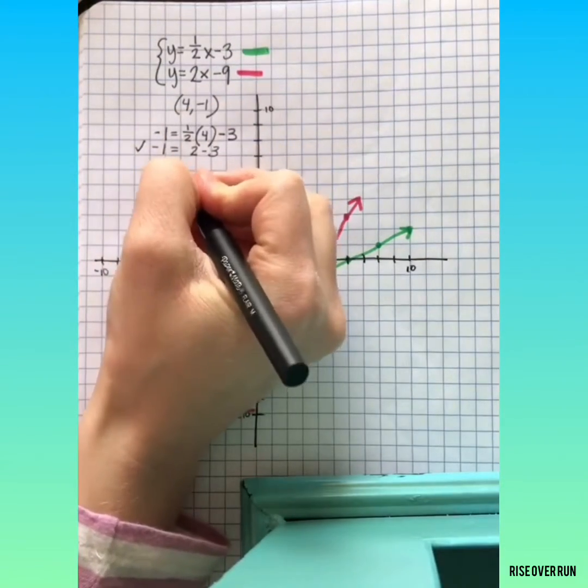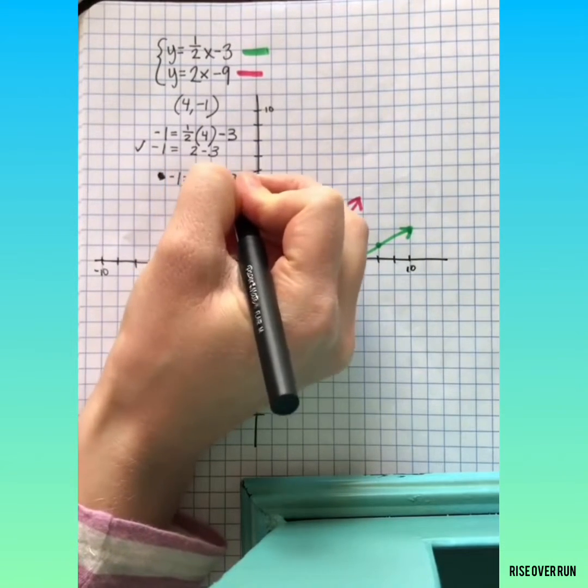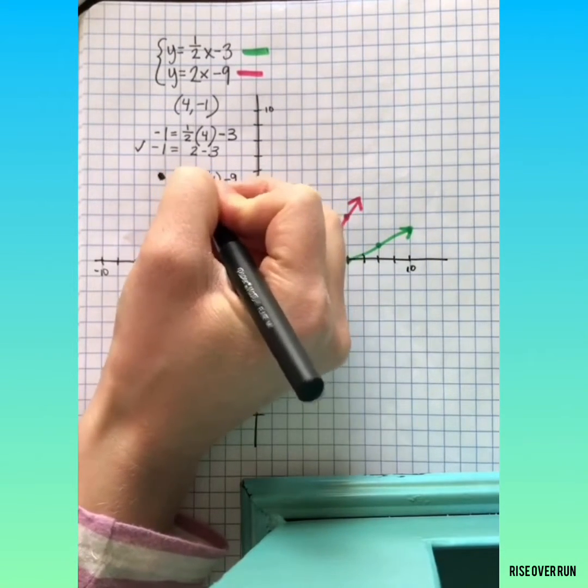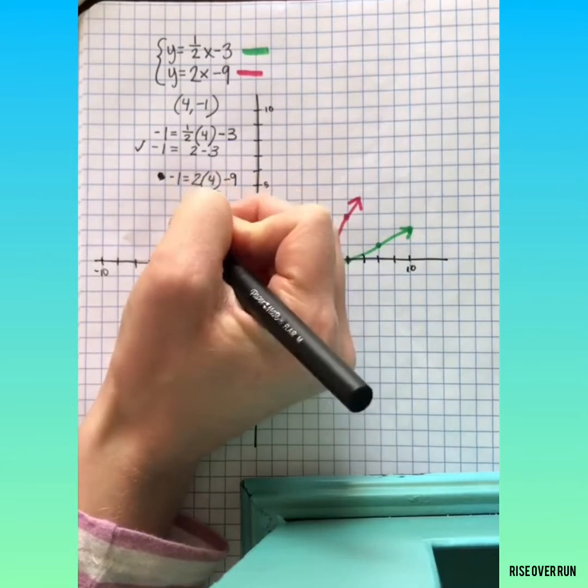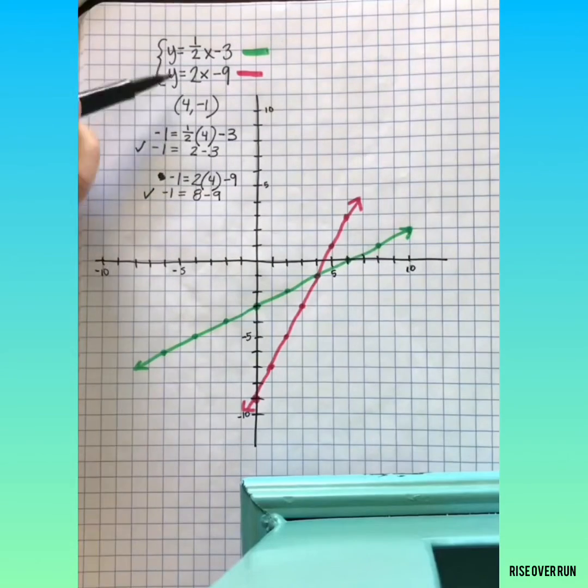Let's try it in the second equation. Y is negative 1, x is 4. 2 times 4 is 8, 8 minus 9 is negative 1. So that is the one point that makes both of these true.